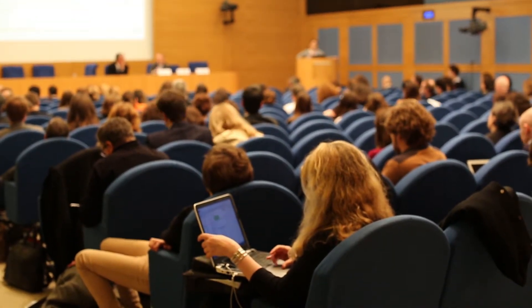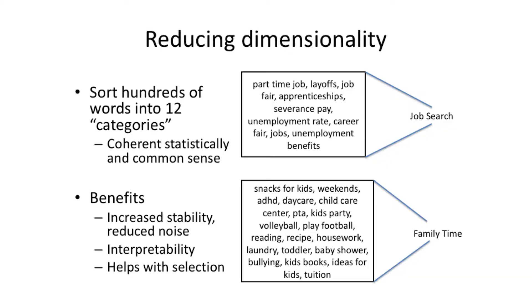Our solution to this problem was to actually reduce the big data. We wanted to reduce the dimensionality of our data set — reduce the number of things we were using to predict subjective well-being. We grouped those thousands of words, which we reduced to hundreds, into 12 categories that reflect different aspects of life. We worked to make sure they both made sense, because using purely statistical methods you could easily end up grouping words that had nothing to do with each other. Here I give two examples: one group of words related to job search, and one group related to people spending time with their family. We group those words together to form a composite variable, which is much easier to use.